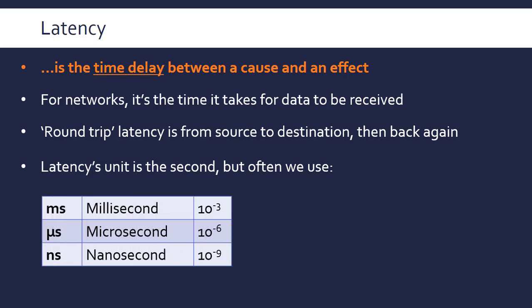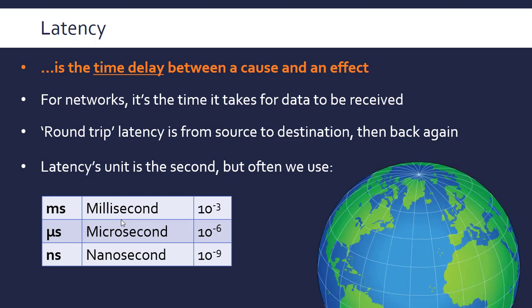The unit is the second, but often because the times are so small, we use prefixes from milli to nano. A millisecond is a thousandth of a second. To give an example, round-trip latency going back and forth between New York and London is about 55 milliseconds with a fiber optic cable. That's due to fiber optic cables using light as the main signal.